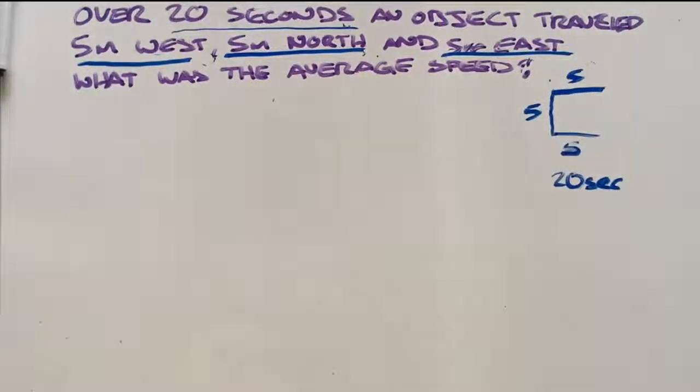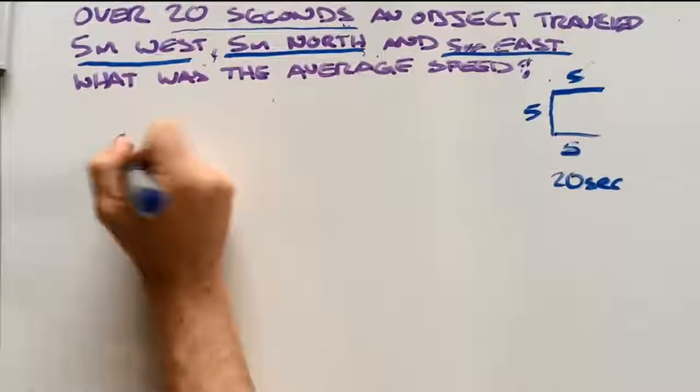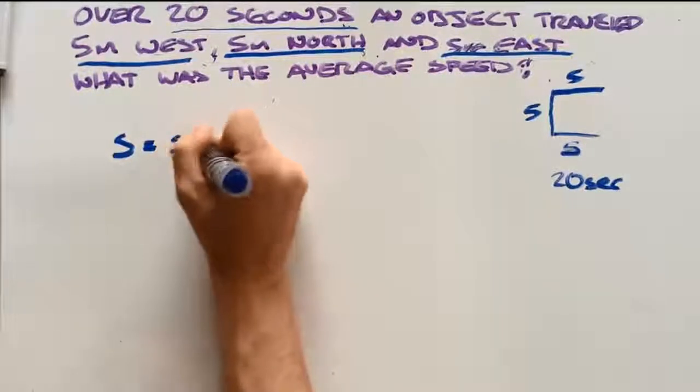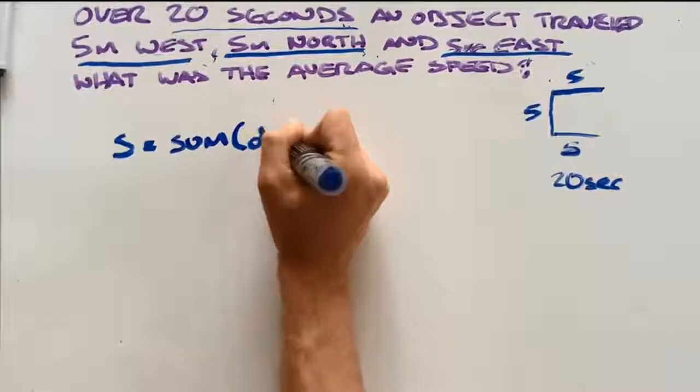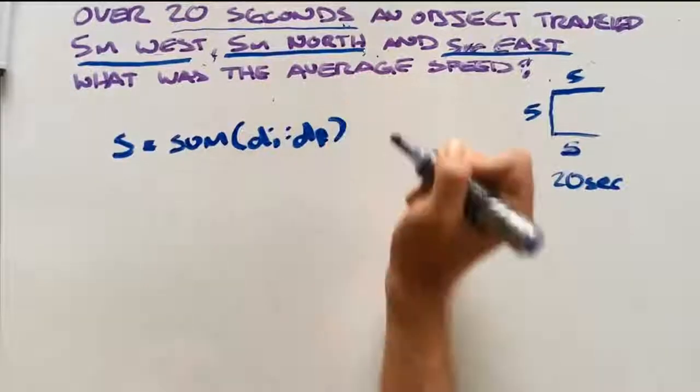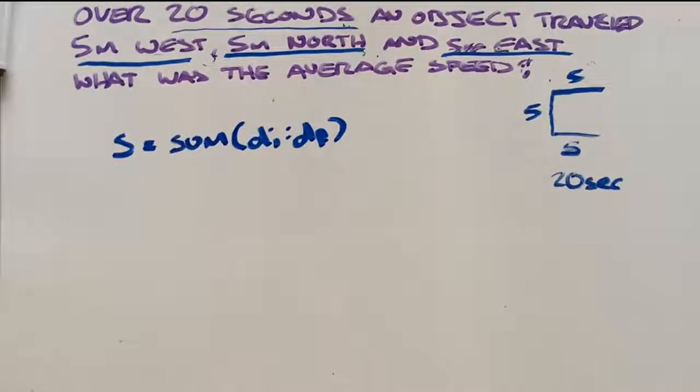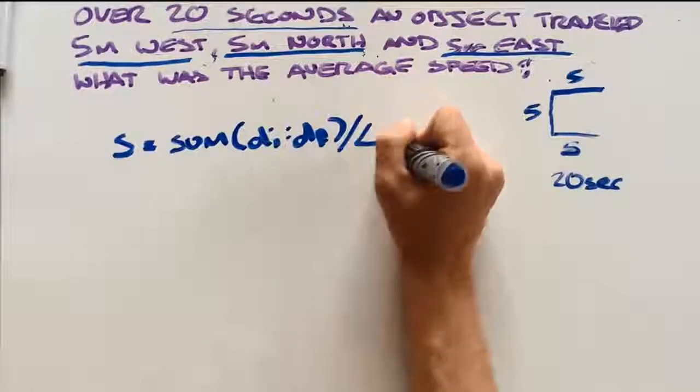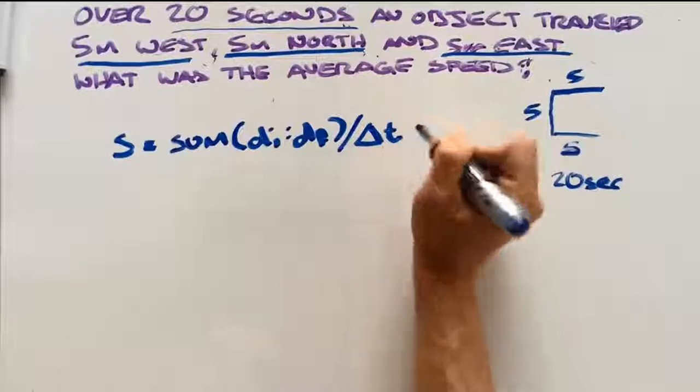It's looking for our average speed, so we need to put down our formula for average speed, which is: speed equals the sum of our distance travelled, where di is our initial distance, df is our final distance, divided by the change in time.